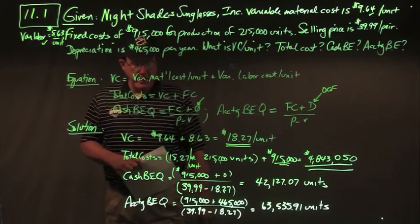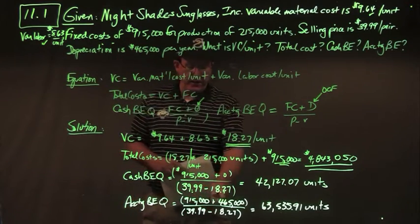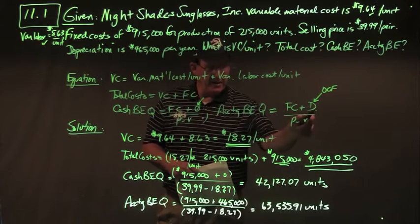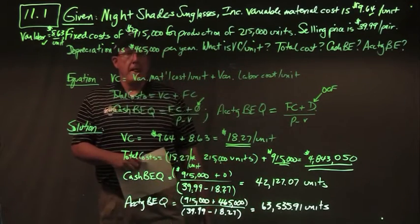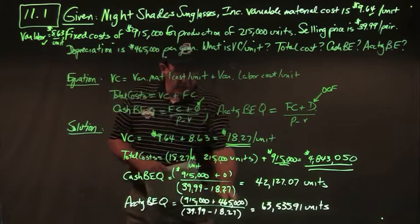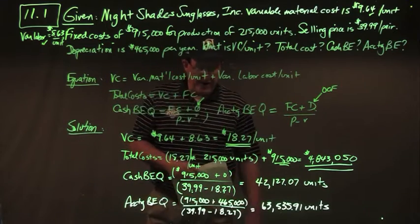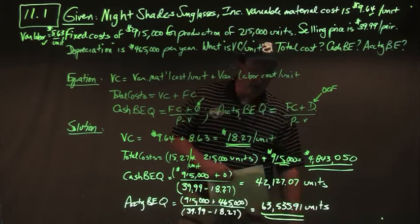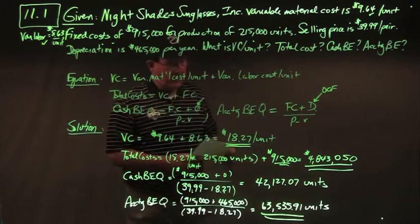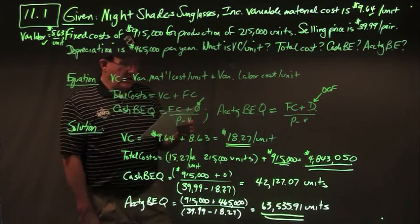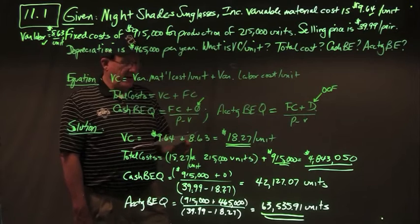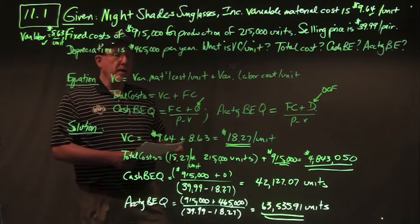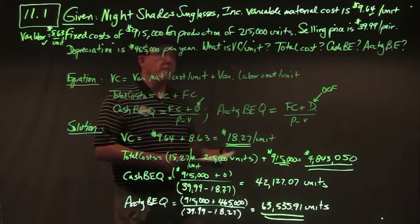Accounting break-even quantity is fixed cost $915,000 plus depreciation $465,000 divided by contribution margin ($39.99 minus $18.27), giving $63,535.91 — or approximately $63,536 units. There are your answers to problem 11.1.